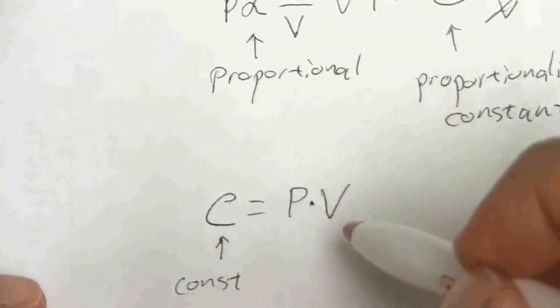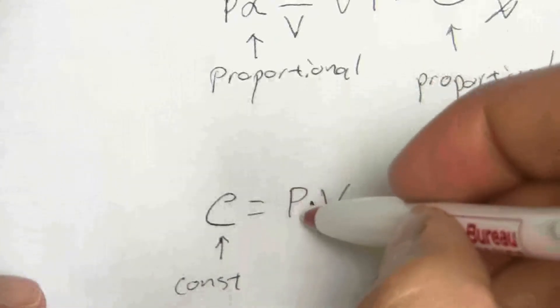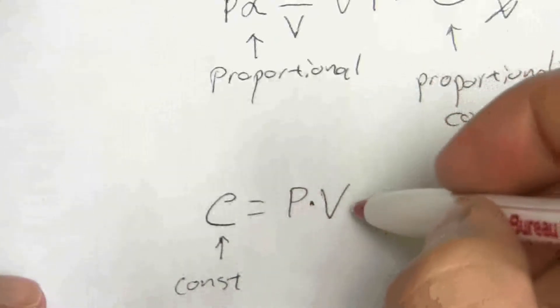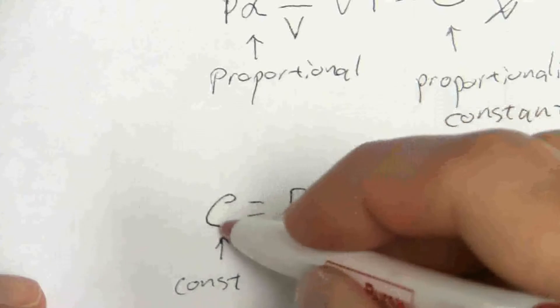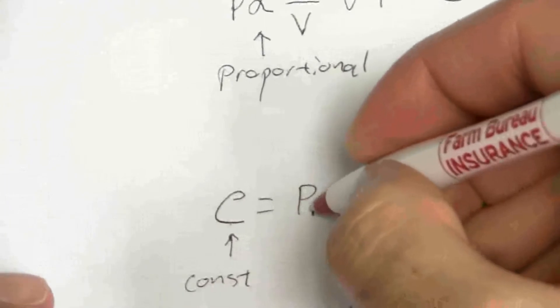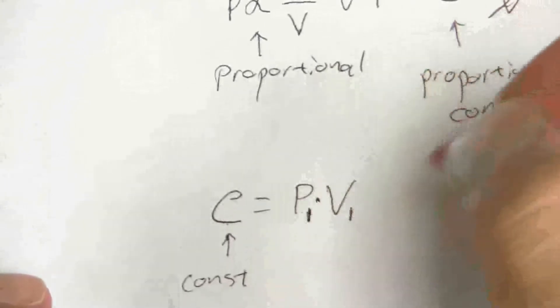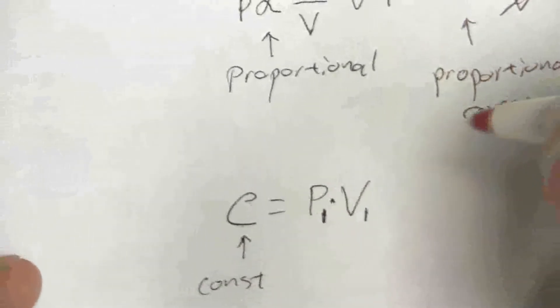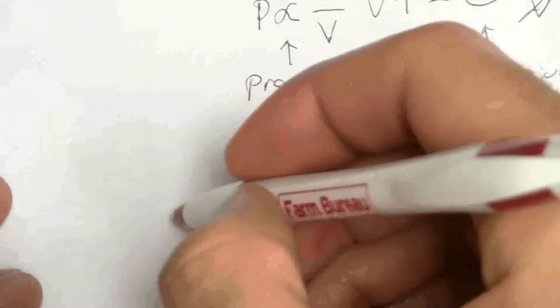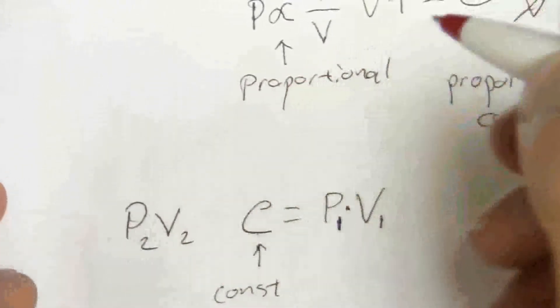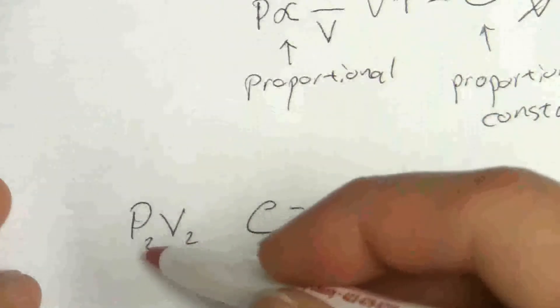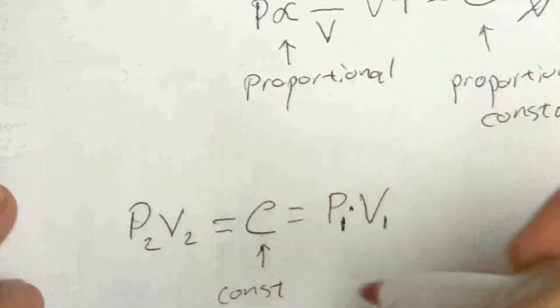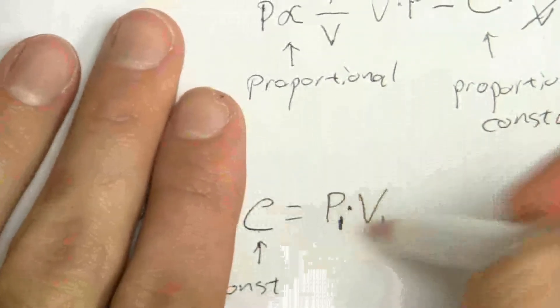So what this is saying is that no matter how my pressure changes, my volume will also change such that when I multiply the volume by the pressure, it's a constant. It doesn't change. So in other words, whatever I start with, say my initial or first conditions, and then I change those and I have my final conditions, they're still going to equal that constant because it is constant.